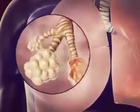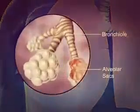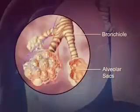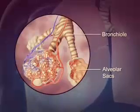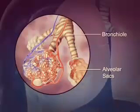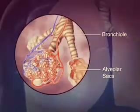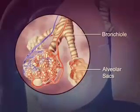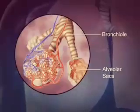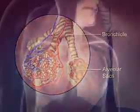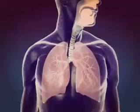Blood flows from the heart through these capillaries and collects oxygen from the alveoli and vice versa. The carbon dioxide in the blood is exchanged for oxygen in the alveoli, thus completing the process of respiration.